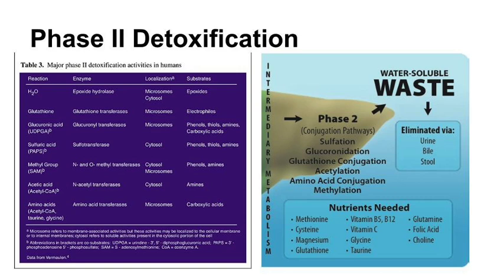The six Phase II pathways are: glutathione conjugation, amino acid conjugation, methylation, sulfation, acetylation, and glucuronidation. Each pathway uses a specialized enzyme for the reaction to occur.